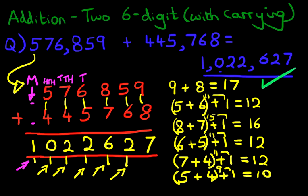And that is correct. That is how we do addition of two six-digit numbers with carrying using the vertical format. Thank you.